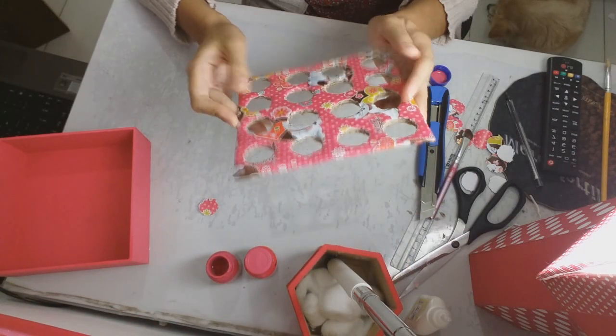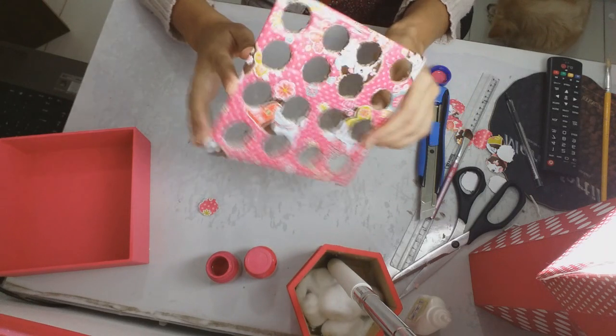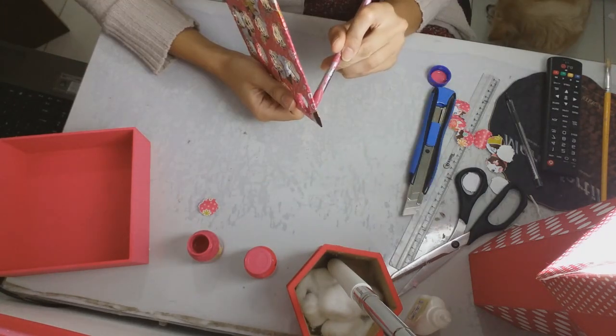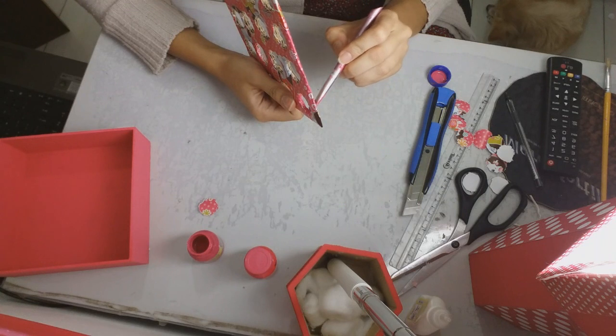Círculos recortados. Agora para dar um acabamento melhor, pinte essas bordas internas dos círculos para que a cor do papelão não fique exposta.